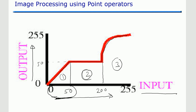Now consider the second region. The input gray values from 50 to 200 are written in the output image as a constant value of 50. So irrespective of whether the input gives a value of 50, 100, 150, or 200, all these values are mapped to a single value of 50 in the output image. In the third region, where the range is from 200 to 255, an exponential rise of values is observed, so the output gray intensities will not be the same as the input gray intensities.